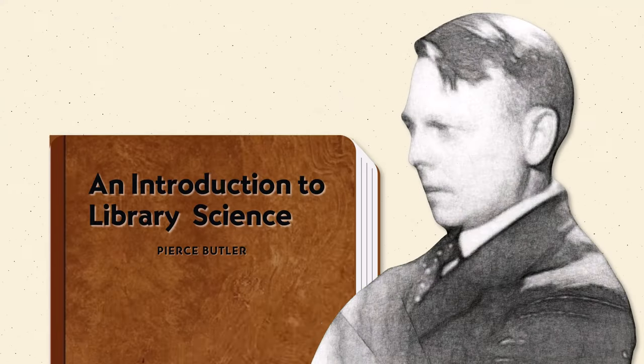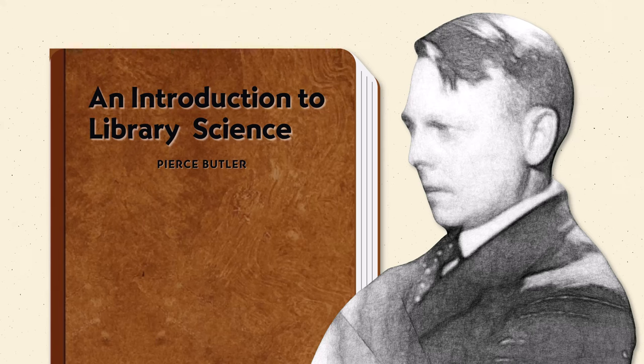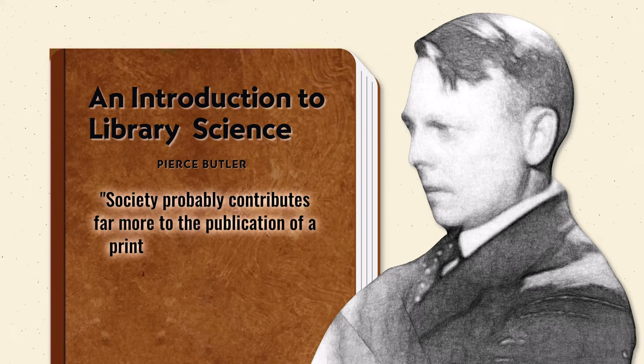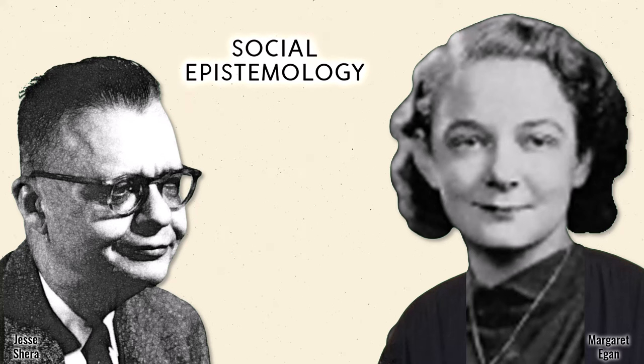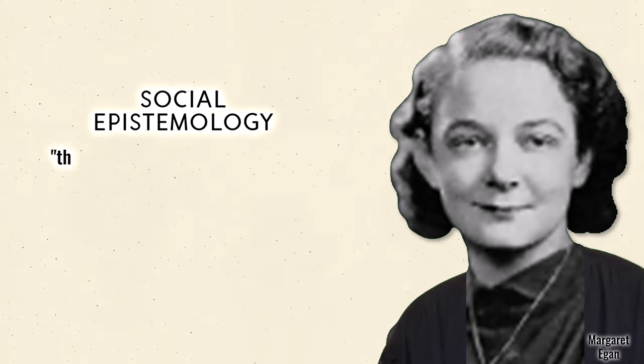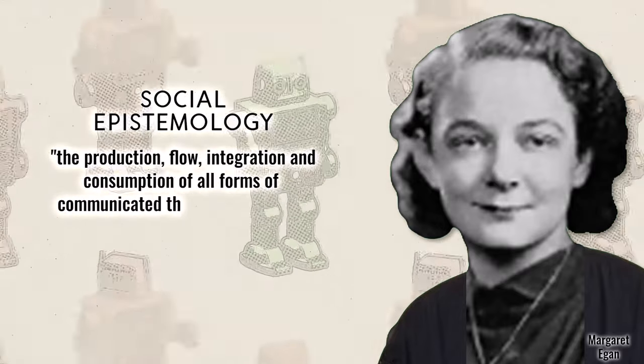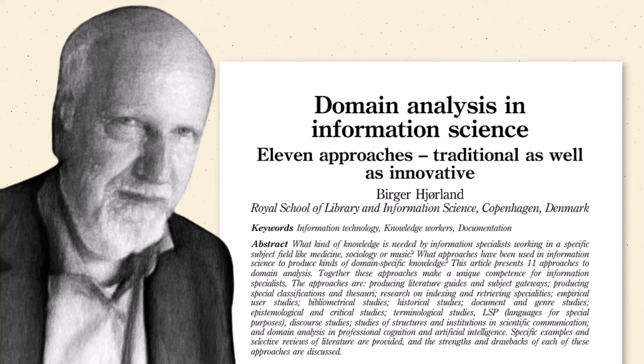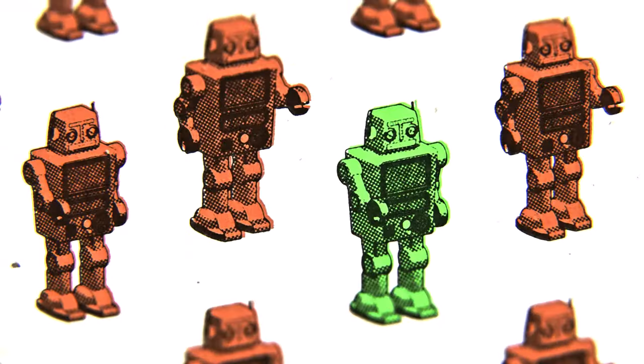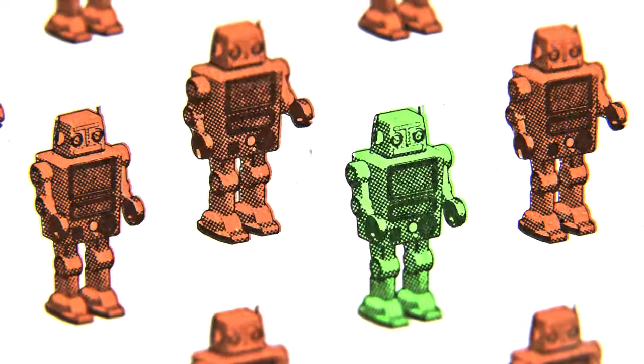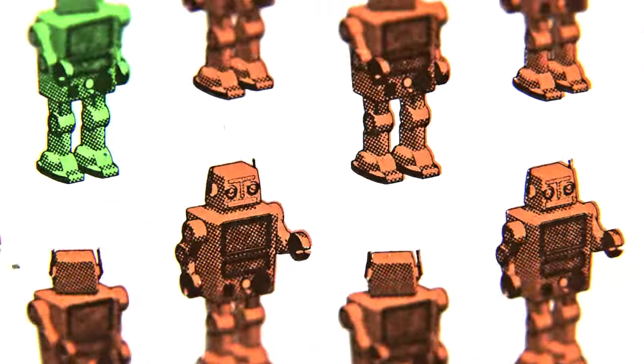In actuality, this turn may also be considered a return, because social perspectives flourished in the original visions of information science. An early textbook of library and information science by Pierce Butler opens with a striking statement: 'Society probably contributes far more to the publication of a printed book than does the author who composes it.' In the 1950s, Margaret Egan and Jesse Shera developed the big idea of social epistemology, in which information science and its professions oversee the production, flow, integration, and consumption of all forms of communicated thought throughout the entire social fabric. Nowadays, a crusader for this turn is Birger Hjørland, the architect of a socio-cognitive approach known as domain analysis. It focuses upon informational patterns within academic disciplines. Any information research into a collective — whether a profession, trade, discipline, or hobby — is aligned with the socio-cognitive turn, which is widespread in information science.